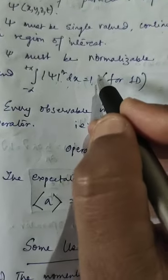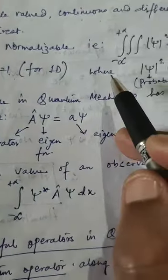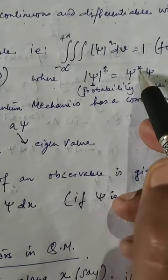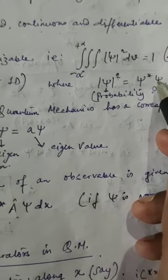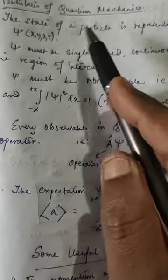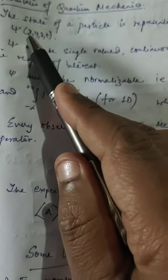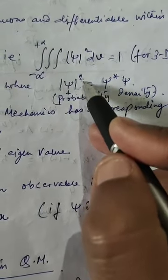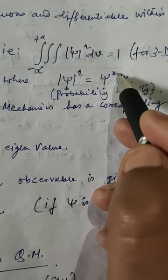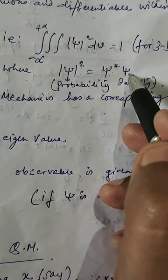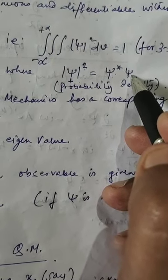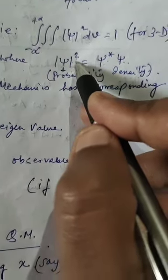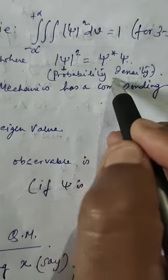This normalization condition is very very important — every psi which represents a particle must satisfy it. Mod of psi squared is psi-star times psi, where psi-star is the complex conjugate of psi, because psi can be a complex quantity. So mod of psi squared represents the probability density — the probability of finding the particle per unit volume.